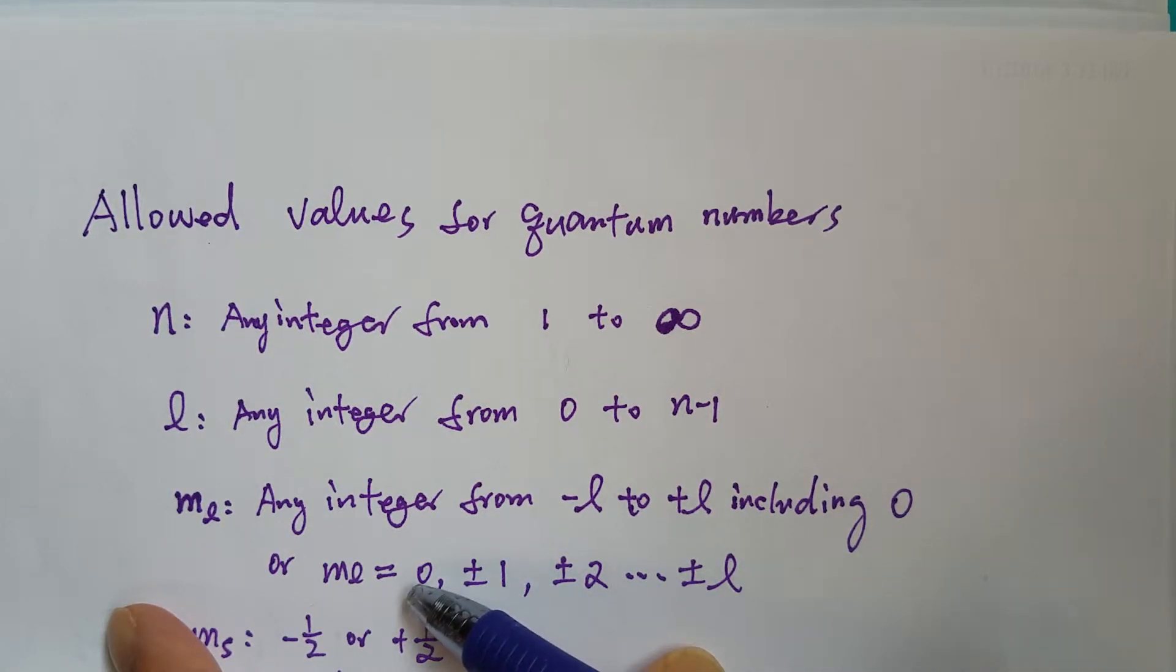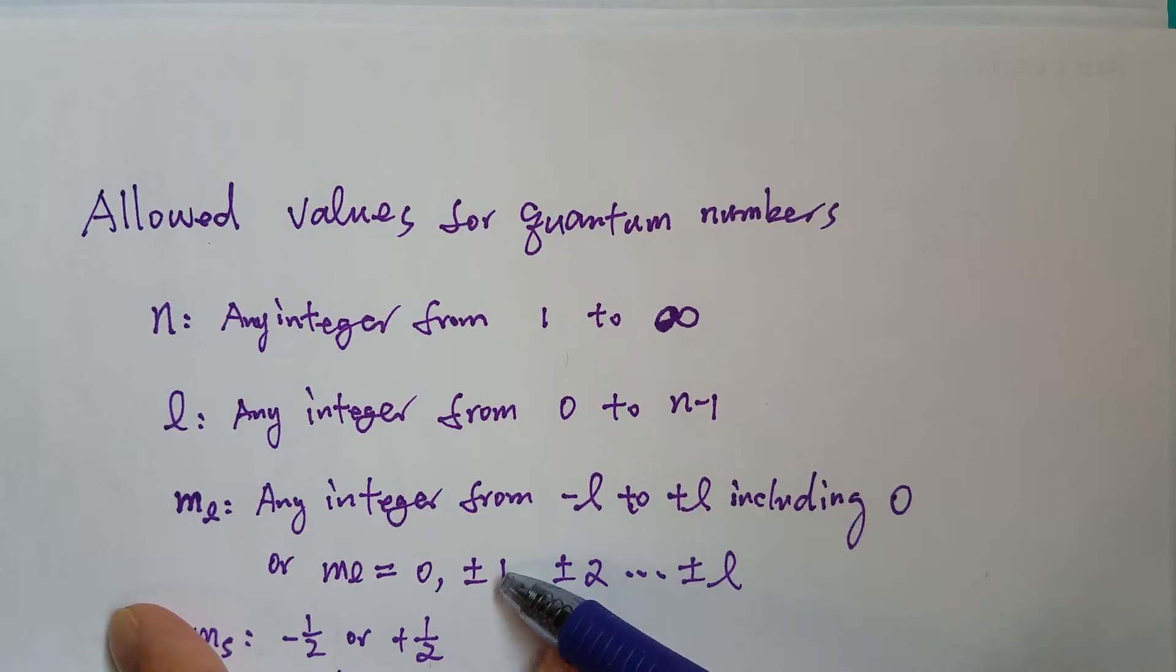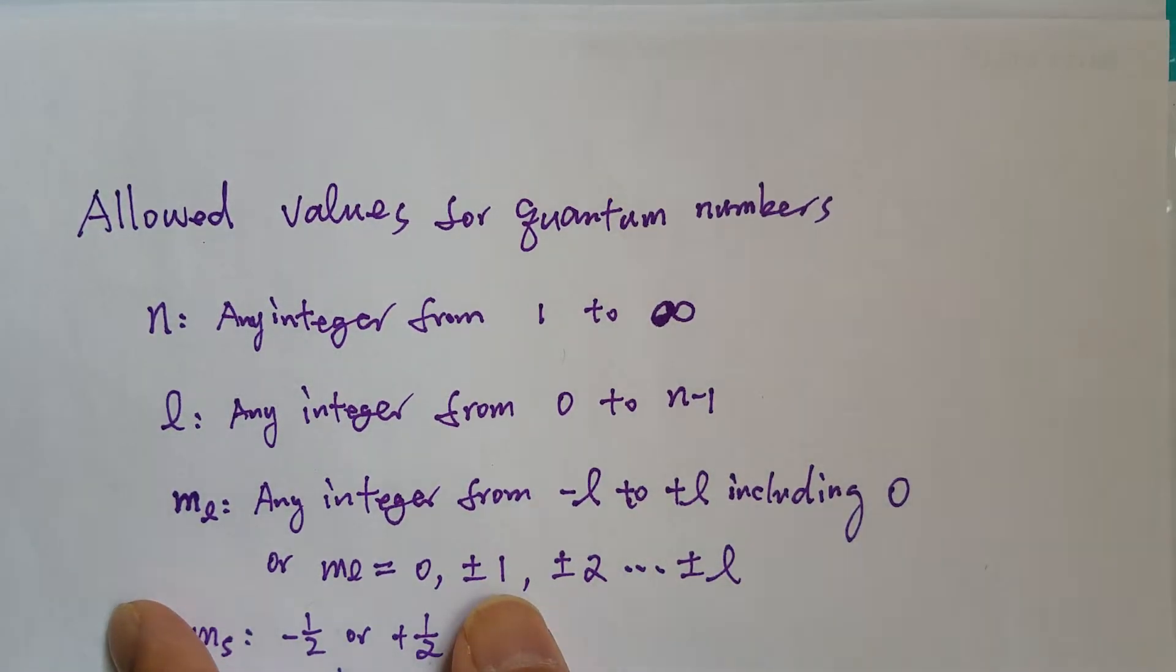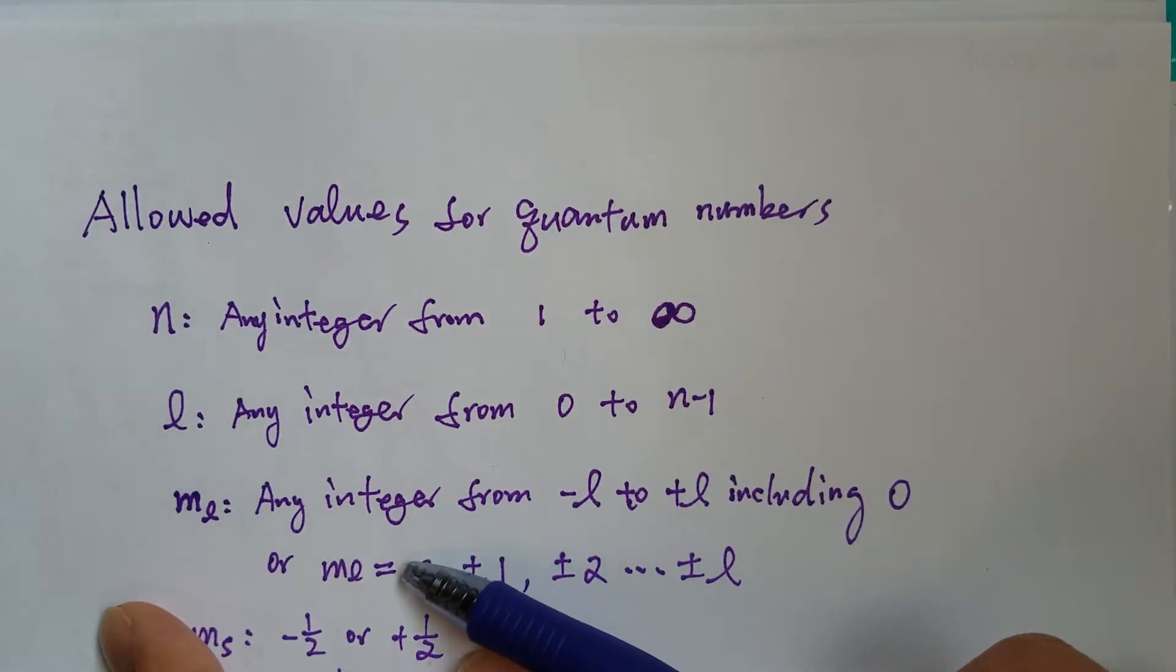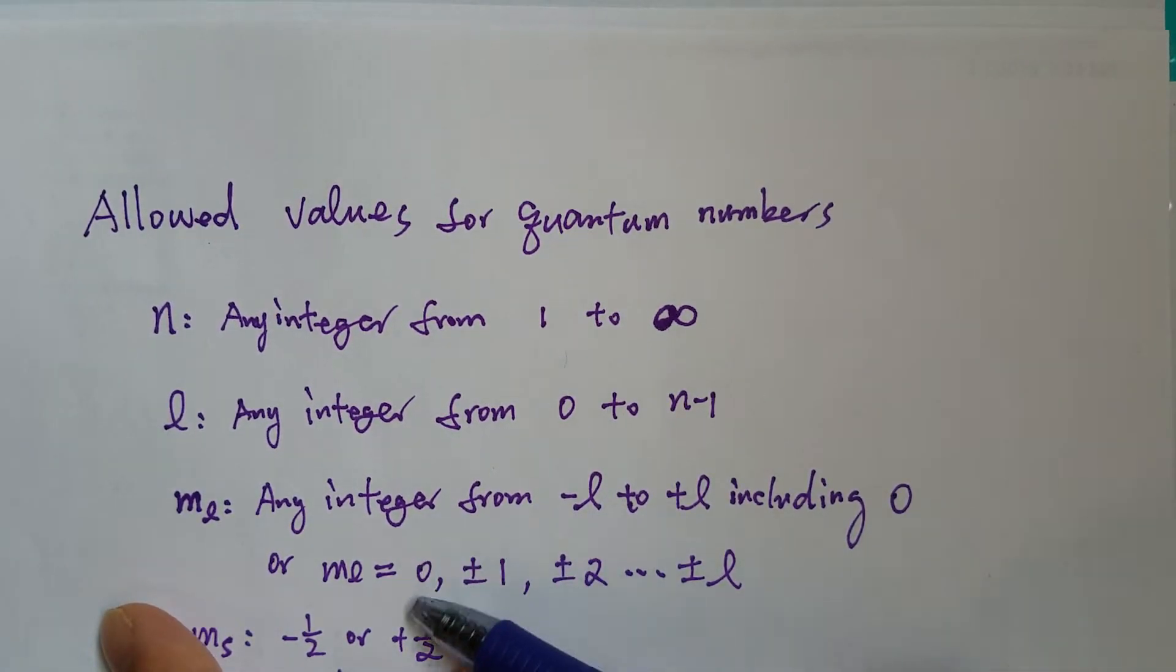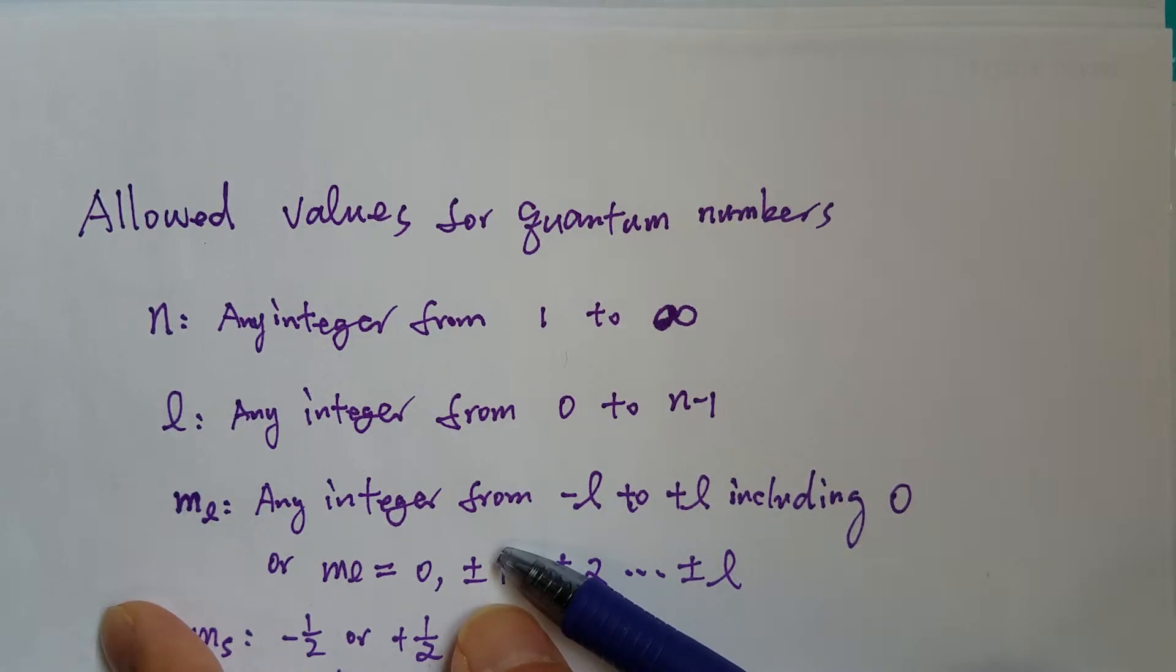So zero plus minus one, that's three orbitals. Now we need to go back. With the three ML values, we need to find out the subshell.